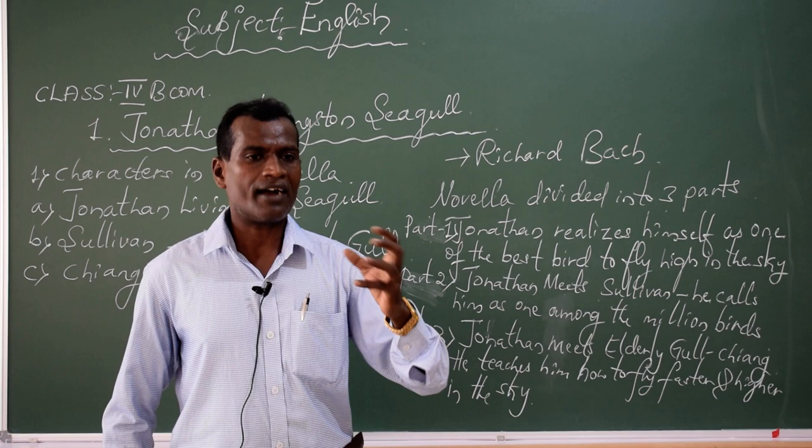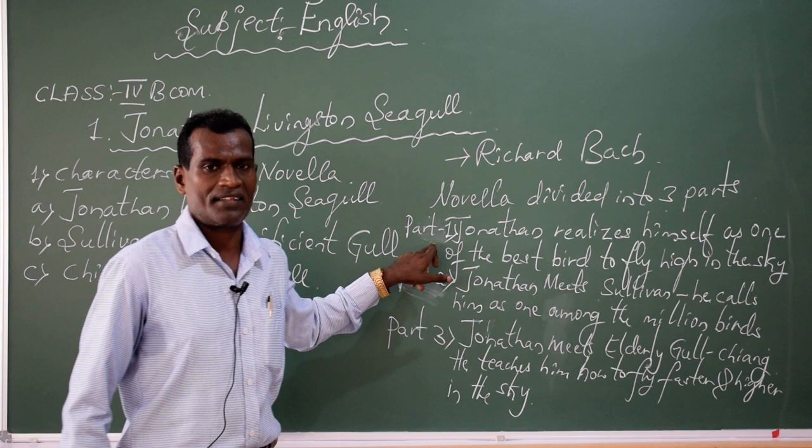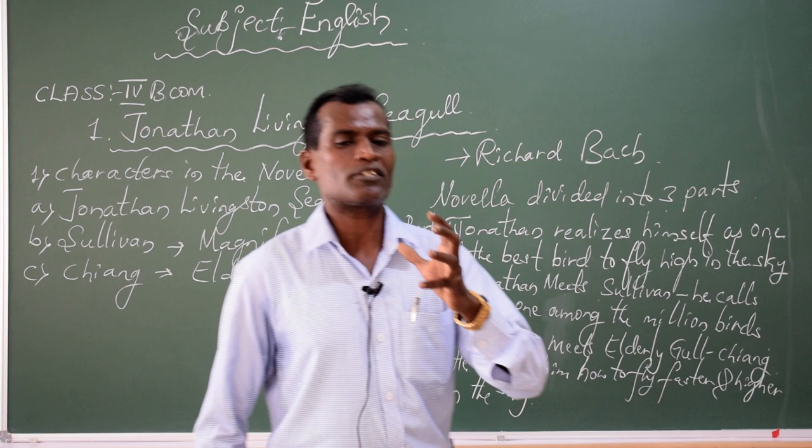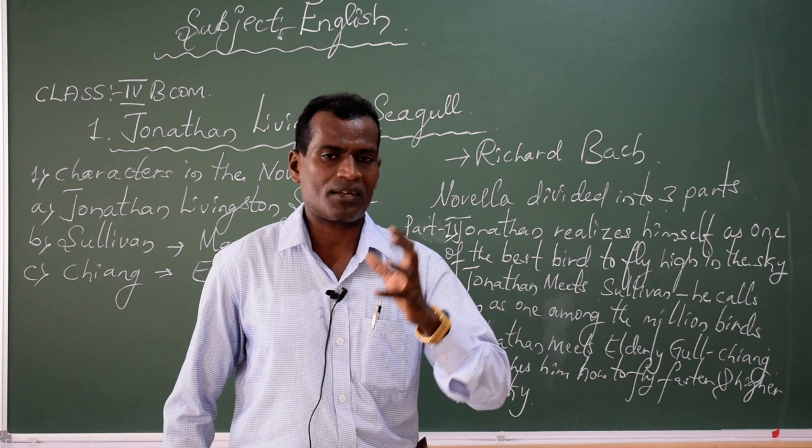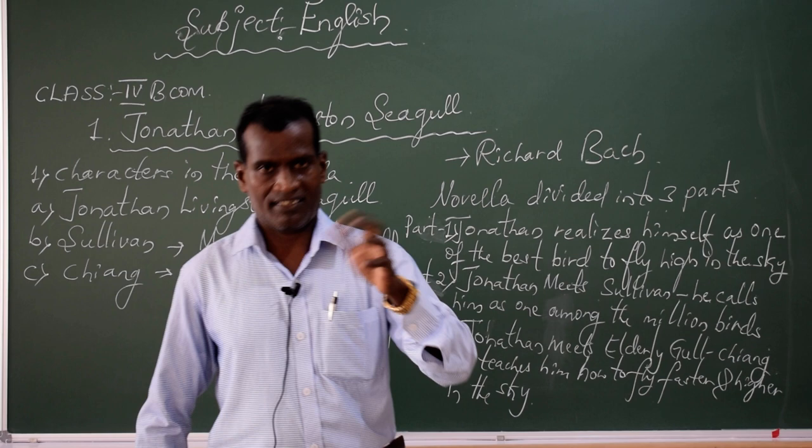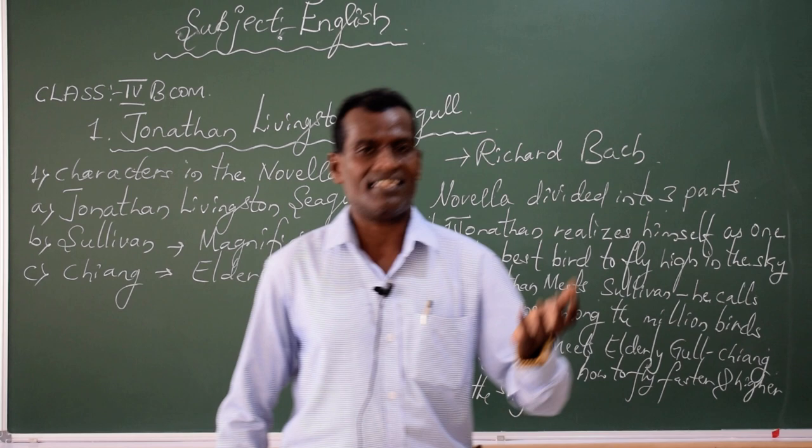The second part of the novella describes about how Jonathan Livingstone Seagull is going to meet Sullivan. Sullivan is also one of the elderly birds who always tries to fly like Jonathan Livingstone, but many times fails to fly high in the sky.